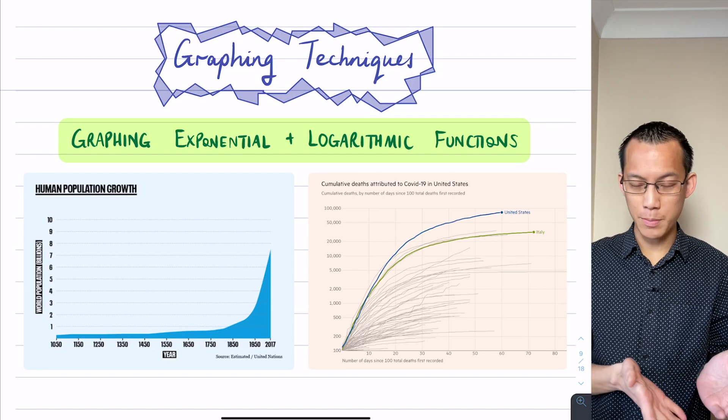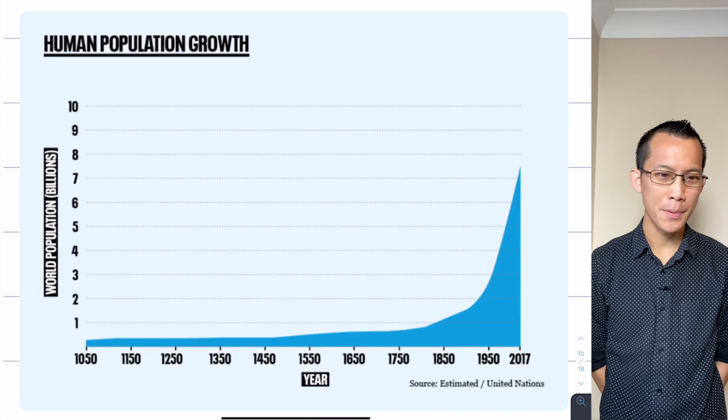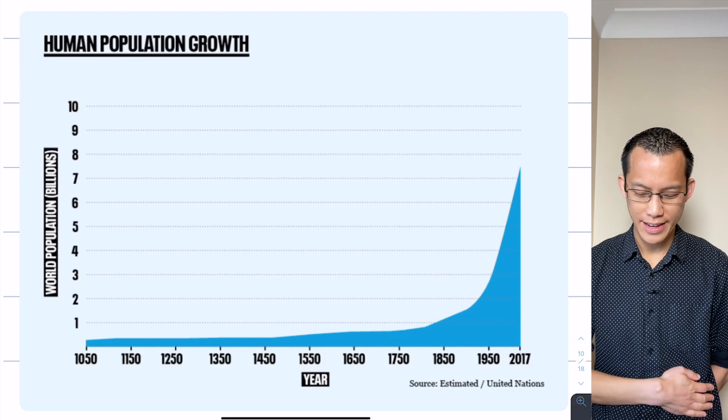So here are a couple of examples of an exponential and a logarithmic graph. Let's just briefly look at them. This is a human population growth chart over centuries.